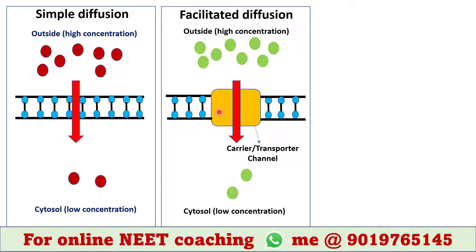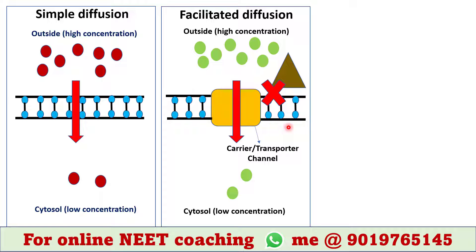A protein molecule embedded in the plasma membrane facilitates the transport of this molecule, hence it is called facilitated diffusion. These types of proteins are called carrier proteins, transporter proteins, or channels. Polar molecules and large ions dissolved in water cannot diffuse freely across the plasma membrane due to its hydrophobic nature, hence they require assistance.